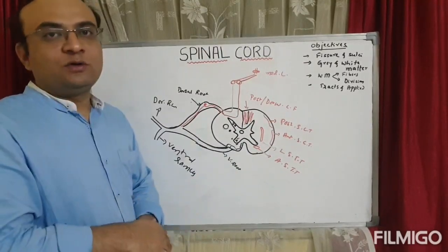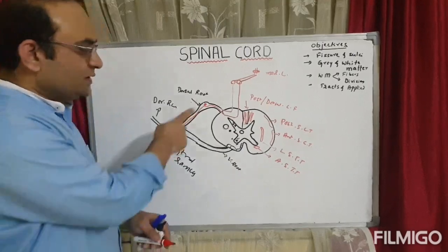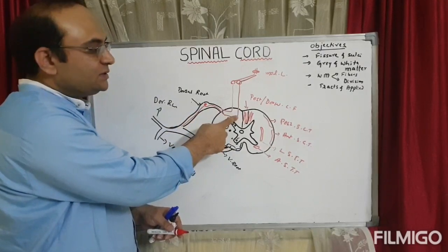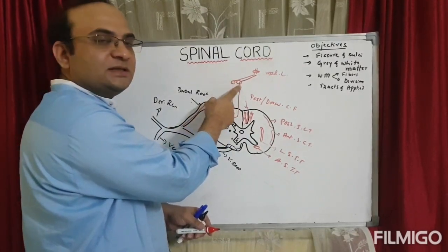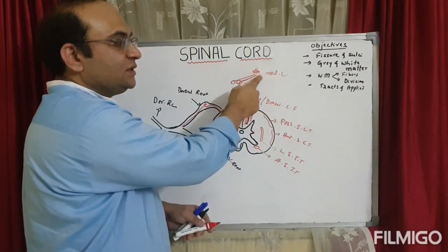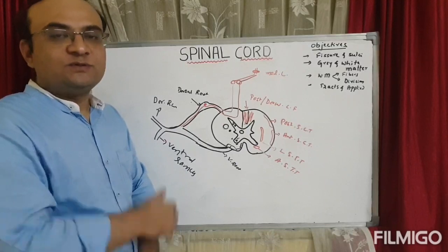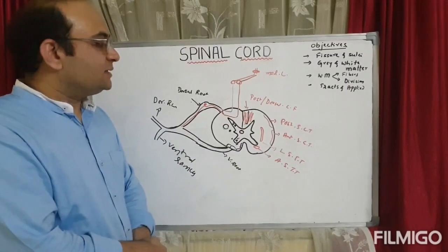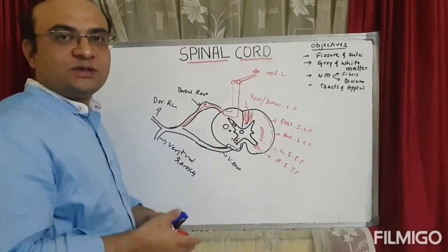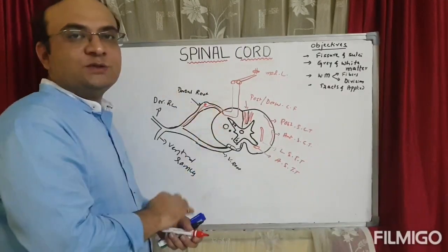The medial lemniscus fibers move upward and end in the ventroposterolateral (VPL) nucleus of the thalamus. From there, the third order neuron begins and ends in the sensory cortex, area 3-1-2. So the posterior column fibers carry conscious proprioception, tactile discrimination, pressure, and vibration.